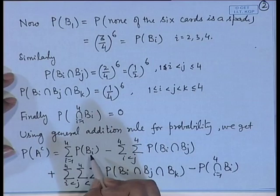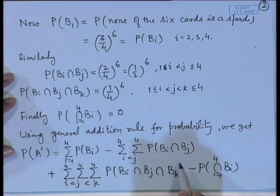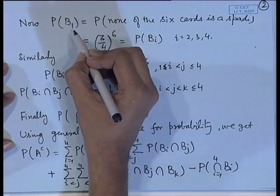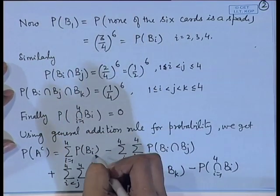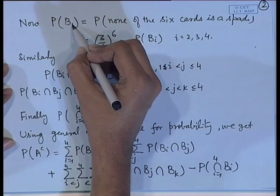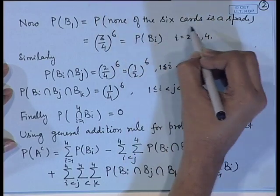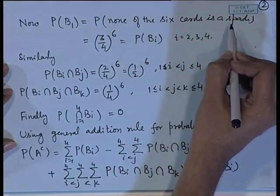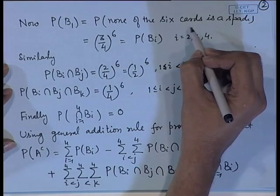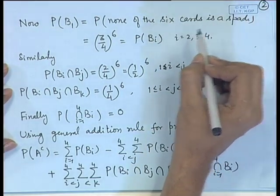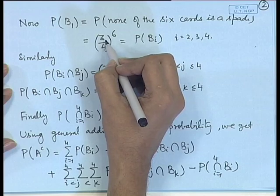Consider P(B_1): none of the 6 cards is a spade. There are 13 spades in 52 cards, so in one draw the probability of not getting a spade is 39/52 = 3/4.